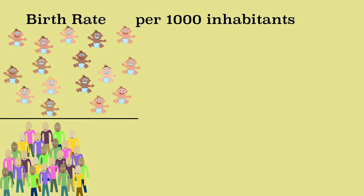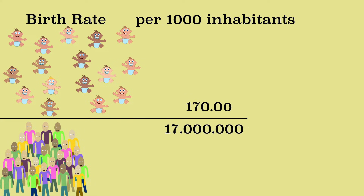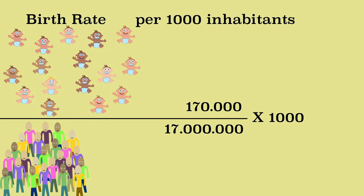We do this in the following way. The Netherlands had 17 million inhabitants in 2016 and 170,000 babies were born in that year. We divide the number of babies by the number of inhabitants and multiply by one thousand. We divide 170,000 by 17 million and multiply by 1,000. So the birth rate of the Netherlands in 2016 was 10.0.